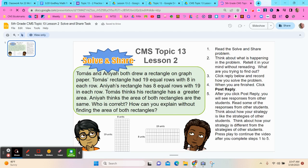This says Tomas and Anaya both drew a rectangle on graph paper. Tomas's rectangle had 19 equal rows with 8 in each row. Anaya's rectangle has 8 equal rows with 19 in each row. Tomas thinks his rectangle has a greater area. Anaya thinks the area of both rectangles are the same. Who is correct?